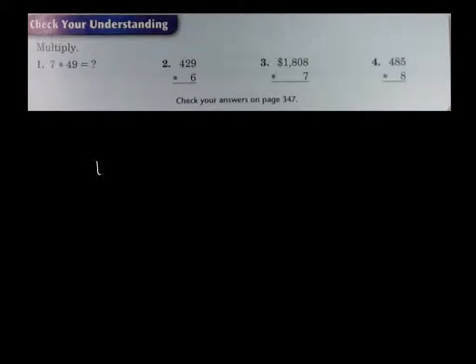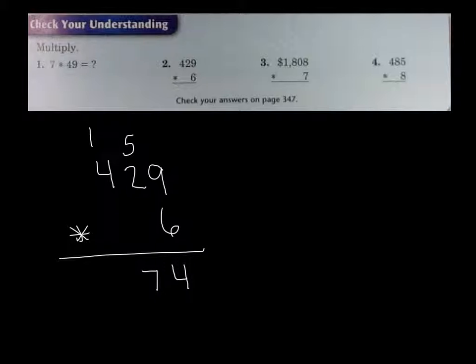Who can walk us through the second problem? 429 times 6. Good, let's see how they did. So 9 times 6 is 54. Put the 4 down, carry the 5. 6 times 2 is 12. 12 plus 5 is 17. Carry the 1. 6 and 4 is 24. Plus 1 is 25. Add the comma.